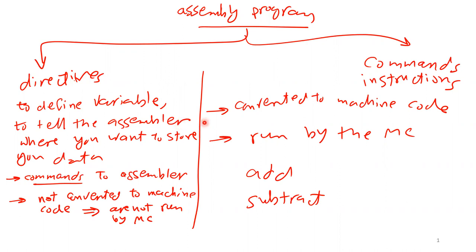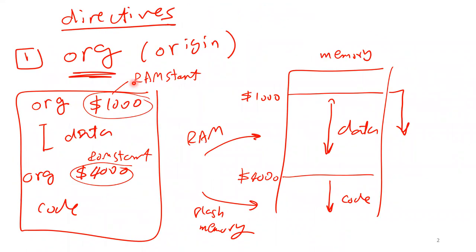I gave you four directives. I started with the very common one: ORG. This directive is used for memory management. Usually for any program we're going to have two ORGs — ORG 1000 and ORG 4000. ORG 1000 is where you want to put your data in memory — variable definitions, arrays, and so on. ORG 4000 is where your program should be stored.